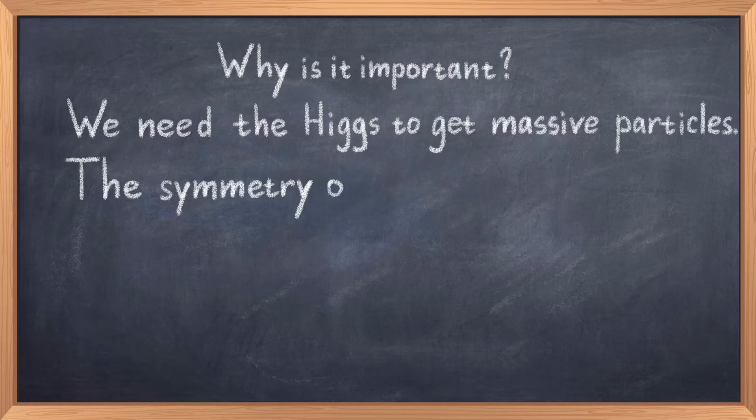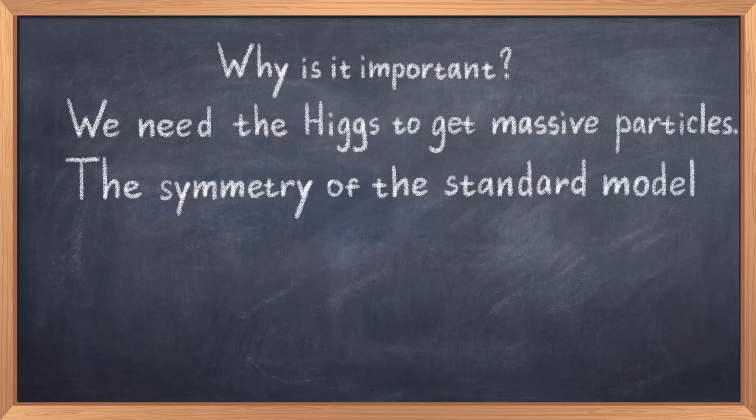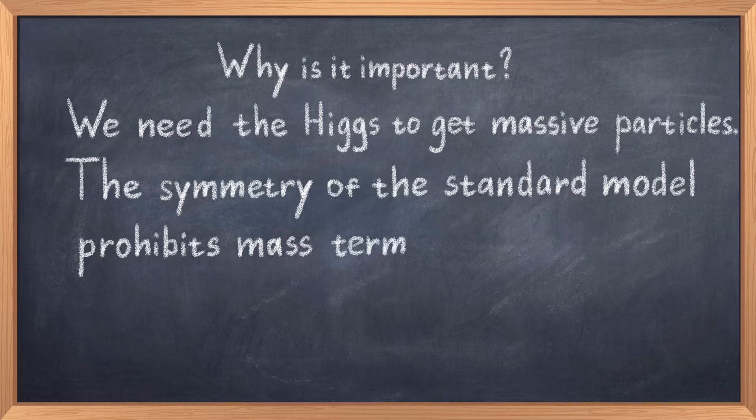When I say fermions, I refer to the quarks and leptons, and leptons include particles like the electron and neutrinos. The issue is similar to that of the gauge bosons. The symmetry group of the standard model simply prohibits us from writing a mass term like in the Lagrangian of QED or like in the Dirac equation.